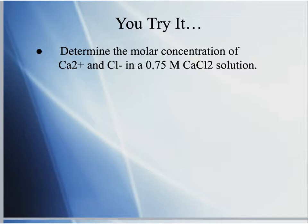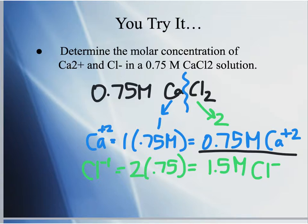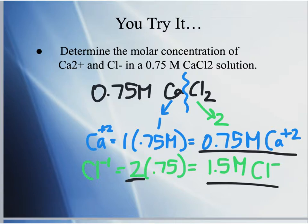Practice: for a 0.75 M CaCl₂ solution, find the molarity of each ion. CaCl₂ has one Ca²⁺ ion: 1 × 0.75 = 0.75 M calcium ion. It has two Cl⁻ ions: 2 × 0.75 = 1.5 M chloride ions.